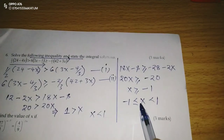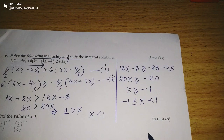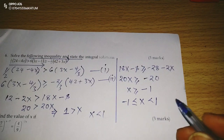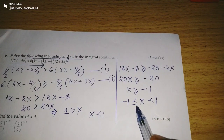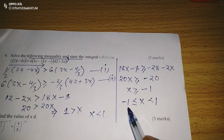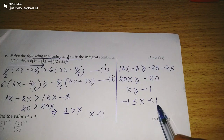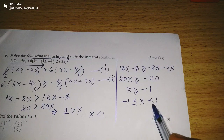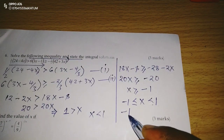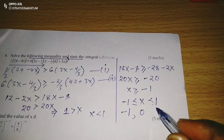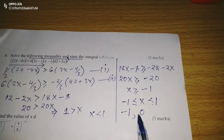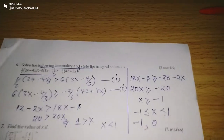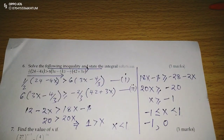So this is now the solution to the inequalities. We can now state the integral solutions, whereby negative 1 is included as the lower limit and the upper limit of x is 1, but 1 is not included. So we begin from negative 1, and the next value is 0. Therefore, we will only have negative 1 and 0 as the integral solutions to the inequalities provided.